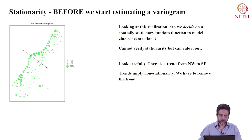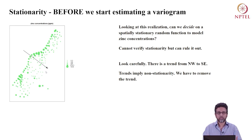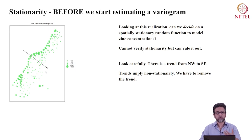Along the outer belt we have relatively bigger circles, and as you move in this direction the circles get smaller. So zinc concentration values appear to decrease as we move away from this outer belt — this is called a spatial trend. Trends imply non-stationarity: if a process shows realizations with a trend, stationarity is not well-founded. However, we can still model this data by removing the trend — subtract it from the values, estimate the variogram, then add it back. I will show you how to do that in a simplified way today.